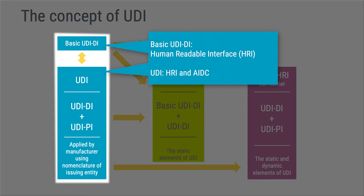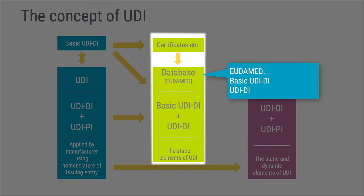But the full UDI, including the UDI-DI and the UDI-PI, shall be readable both to humans and to machines. The machine-readable interface is abbreviated AIDC, which stands for Automatic Identification and Data Capture. Examples of AIDCs are 2D barcodes, dot-matrix codes, biometric codes, or RFID. The basic UDI-DI is used for certificates but also needed when registering the actual device in EUDAMED together with the UDI-DI. Those two are the so-called static parts of the UDI system, meaning that as long as you don't change your device or add or remove devices, they remain the same.